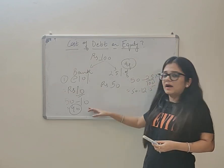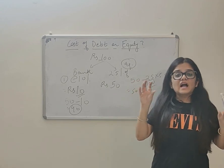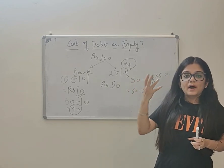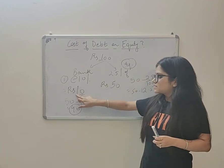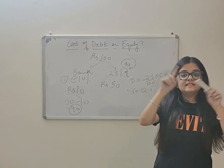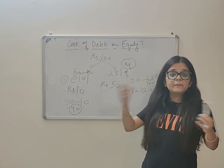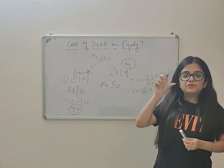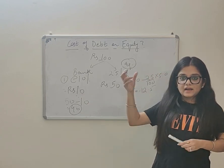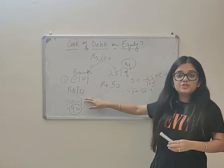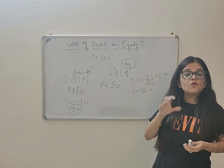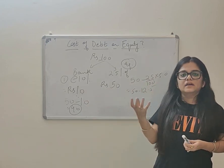Second point is in case of bank loan, you get a tax reduction, a tax advantage. This interest of 10 rupees acts as a tax shield because you can claim deduction on your taxable income.